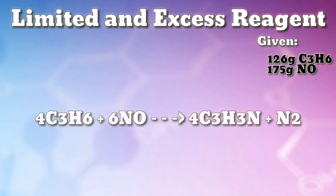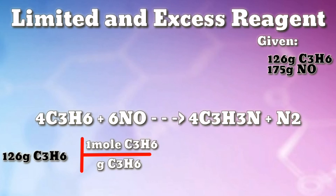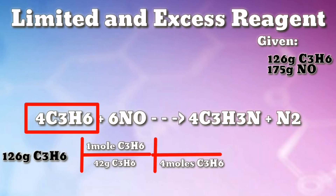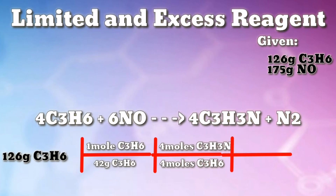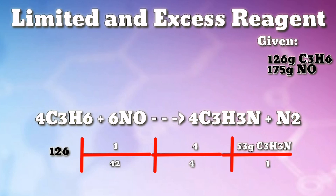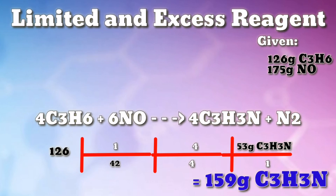Let's have the solution for A — starting with the mass of acrylonitrile produced from the given propylene. Starting with 126 grams of propylene, divide by the molar mass of one mole of propylene (42 grams), apply the stoichiometric ratio from the balanced equation (4 moles propylene to 4 moles acrylonitrile), and multiply by the molar mass of one mole of acrylonitrile (53 grams). Calculation: 126 ÷ 42 × 53 = 159 grams of acrylonitrile.